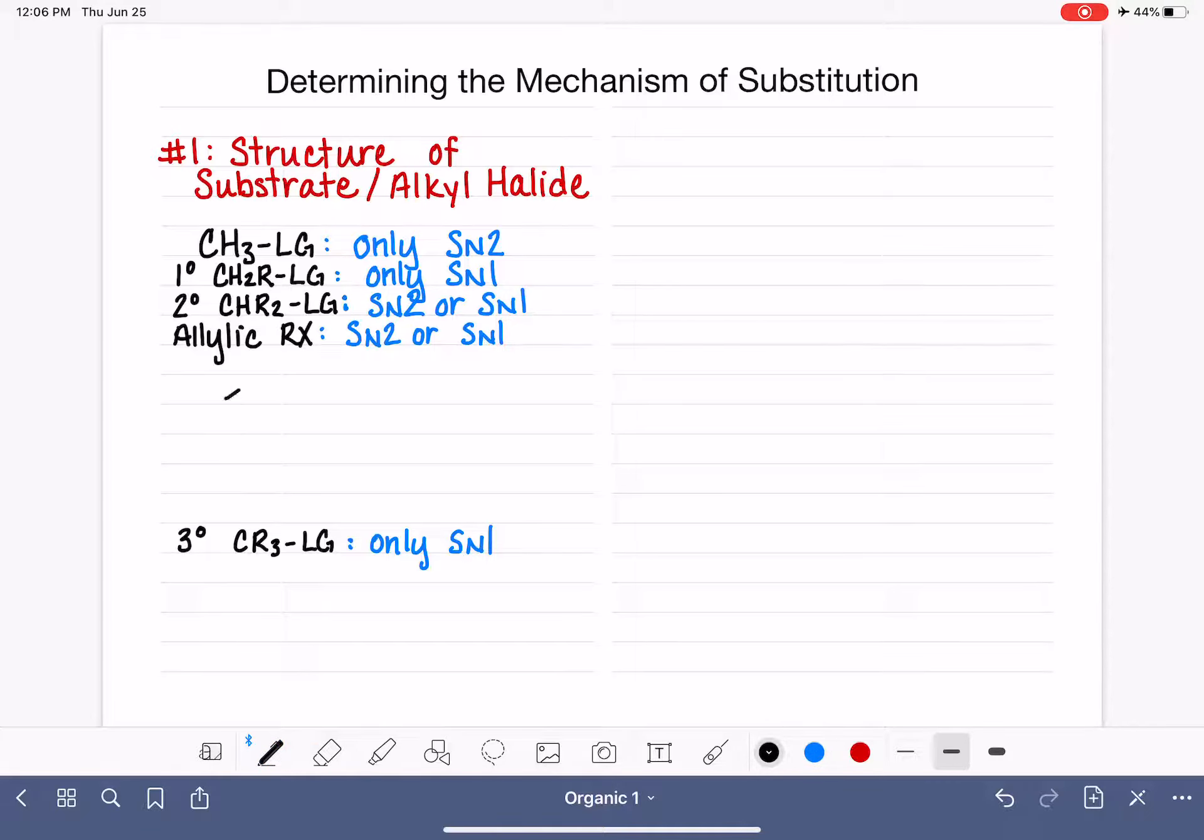And an allylic molecule is one where the leaving group is attached to a carbon that is directly attached to a carbon-carbon double bond. So it's really important that you get the spacing correct on what it means to be allylic.